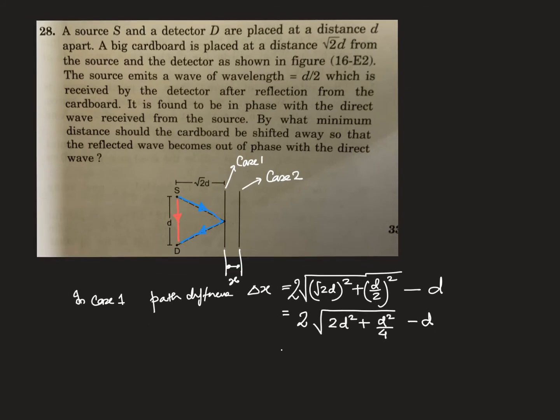2 and 2 there, you get again 2 here. So therefore, root over 9d² minus d, that means 3d minus d, that is 2d.